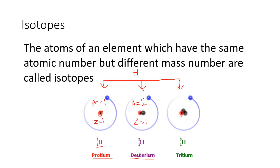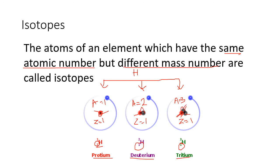The third form is tritium. It has one proton — so atomic number Z equals one — along with two neutrons, giving a mass number of three. Notice that all three forms of hydrogen have the same atomic number (Z = 1), meaning one proton each, but different mass numbers: one, two, and three. This is an example of isotopes.